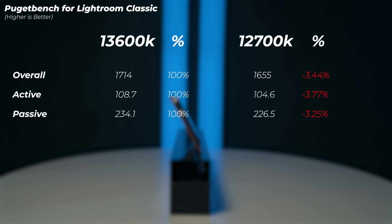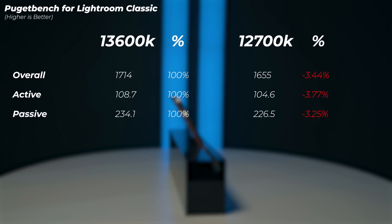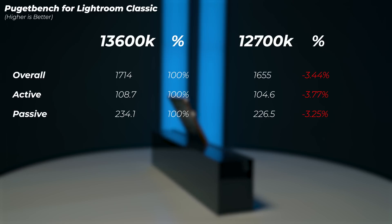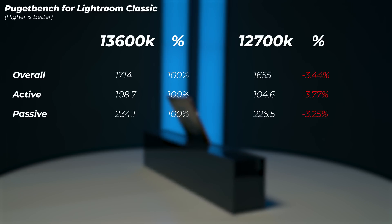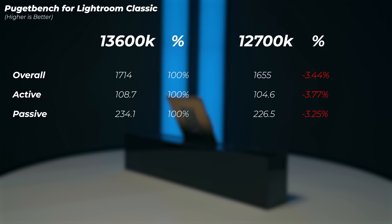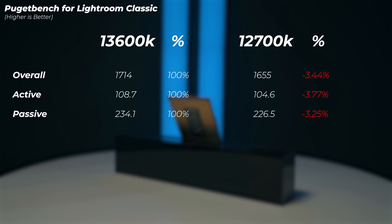In Lightroom Classic, the 12700K is 3.4% slower in the overall score. We can see that the max boost frequencies do matter and that 100 MHz difference counts. The active score is 3.7% and passive score is 3.25% slower on the 12700K.